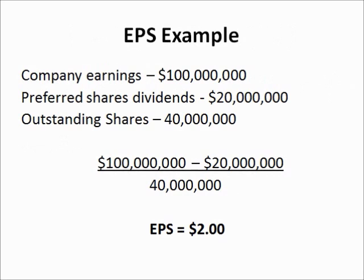Here we will walk through a simple example of how to calculate the earnings per share of a company. Let's say a company's earnings is $100 million, their preferred share dividends paid are $20 million, and the outstanding shares are 40 million. If we take the net income of $100 million minus the $20 million paid in dividends to preferred shareholders, we are left with $80 million. Dividing that by 40 million outstanding shares, we get $2 of the company's earnings per share.